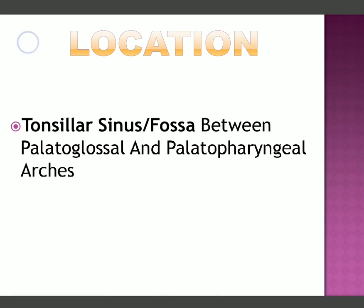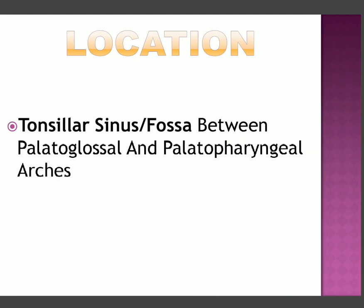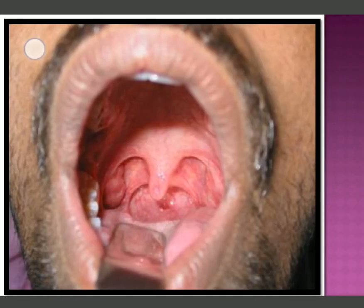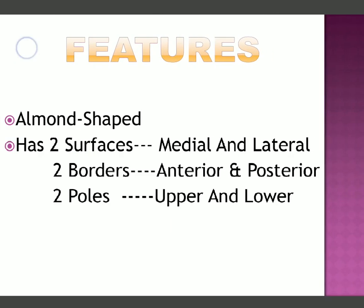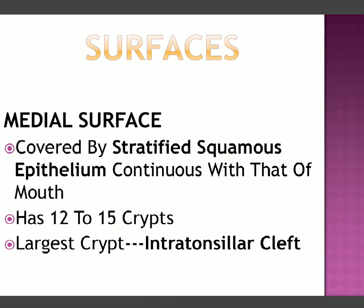The palatine tonsils are located in the tonsillar sinus or fossa, which lies between the palatoglossal and the palatopharyngeal arches. The tonsils are almond-shaped. They have two surfaces — medial and lateral — two borders — anterior and posterior — and two poles — upper pole and lower pole. We will discuss these surfaces, borders, and poles one by one.